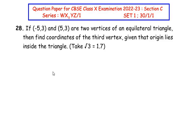Hello and welcome to my channel. In this video we are going to solve the 28th question from CBSE class 10 examination 2022-23, section C, where each question is of 3 marks. This question is from the coordinate geometry chapter. If (-5, 3) and (5, 3) are two vertices of an equilateral triangle, find the coordinates of the third vertex given that the origin lies inside the triangle. Take square root of 3 as 1.7.